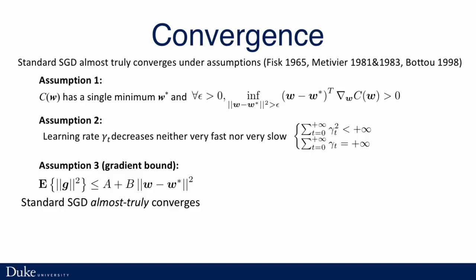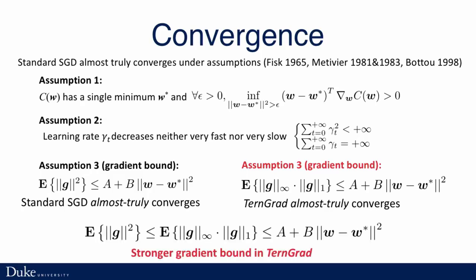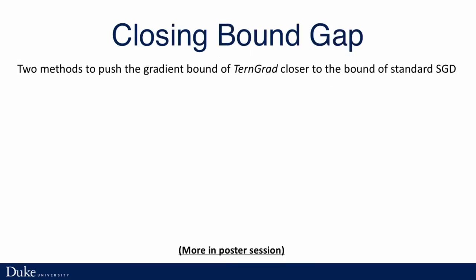We prove the convergence under some assumptions. For standard SGD, it almost only converges under some assumptions. We use almost similar assumptions, but we do need a slightly different assumption 3, which is a bound on the gradient. Under these 3 assumptions, ternary gradients converge with probability 1. Since the maximum norm is always larger than or equal to any gradient component, ternary gradients have a stronger gradient bound. However, we propose two techniques to push the gradient bound of TernGrad closer to the bound of standard SGD.